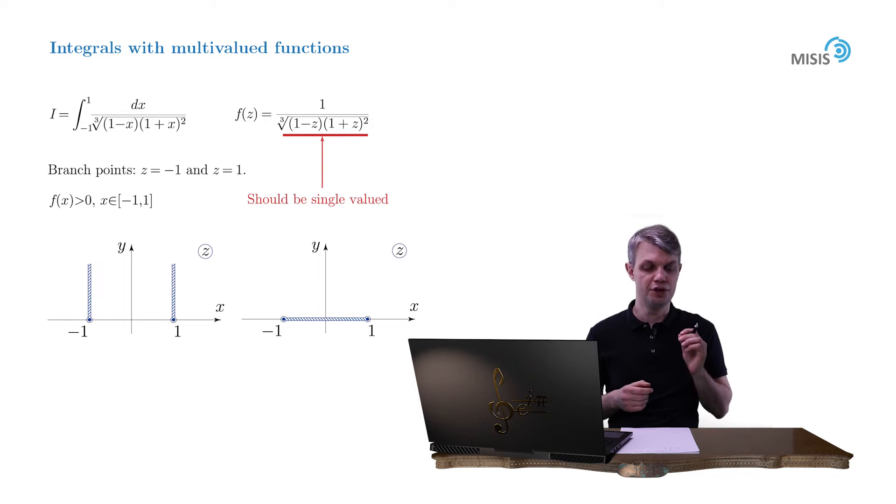And here comes the first general rule of computing the integral containing multivalued function. If you want to compute an integral using complex analysis, we should always try to draw a branch cut in such a way that it coincides with the contour, if it's possible at all. We will elaborate on this in the future, but now just take it as a thumb rule.